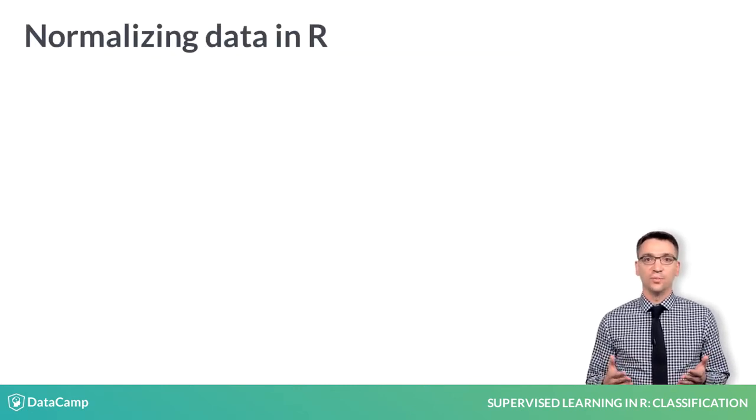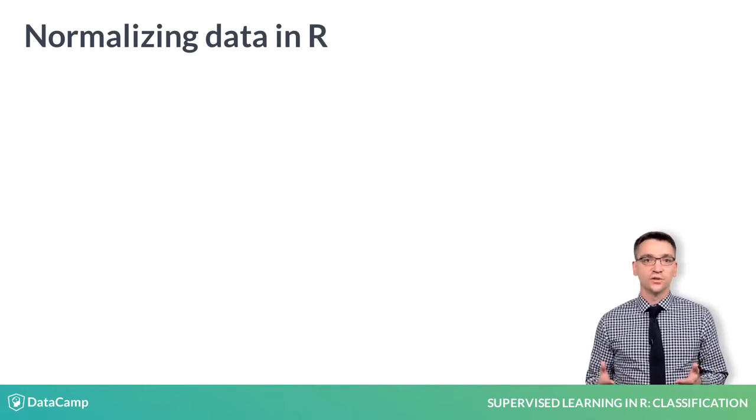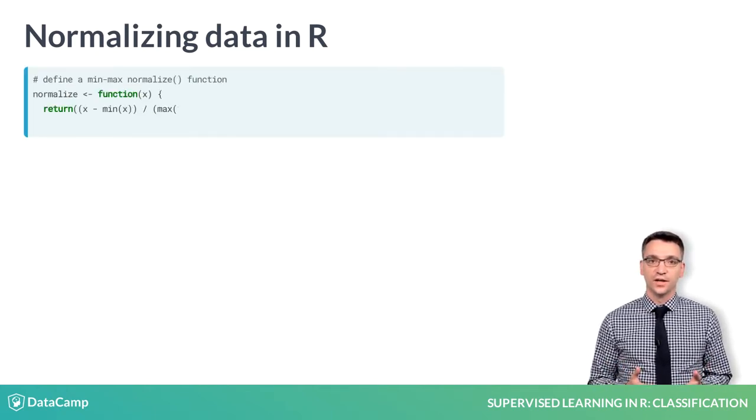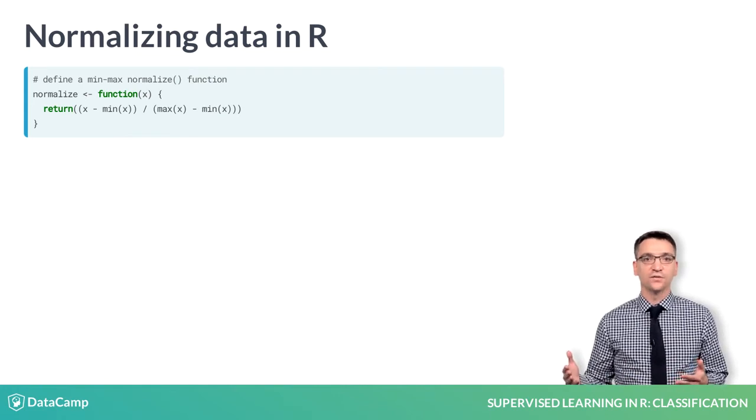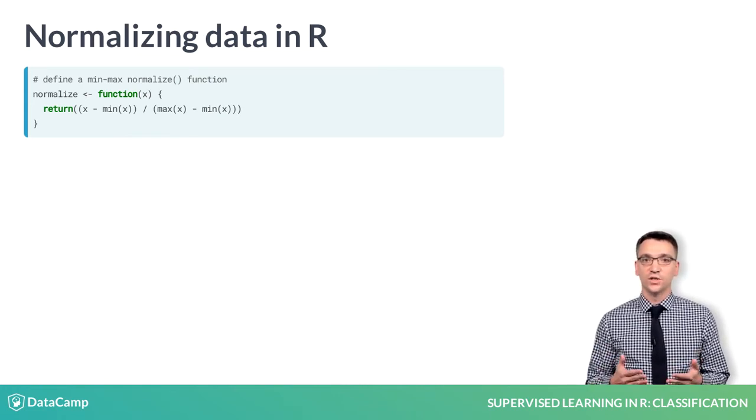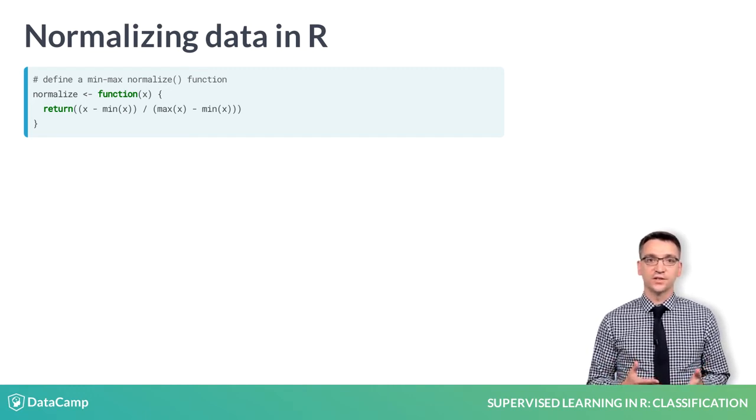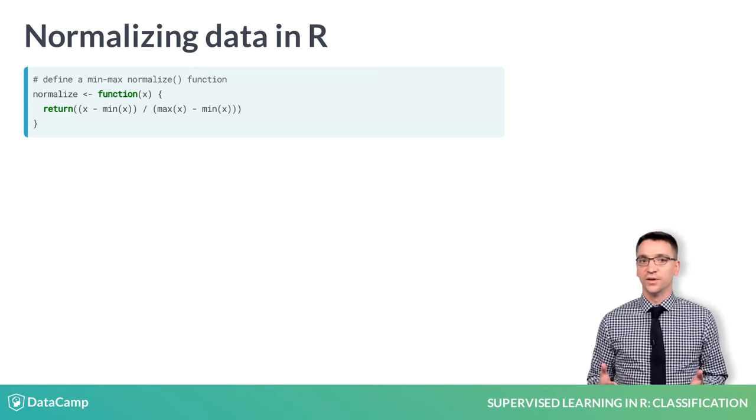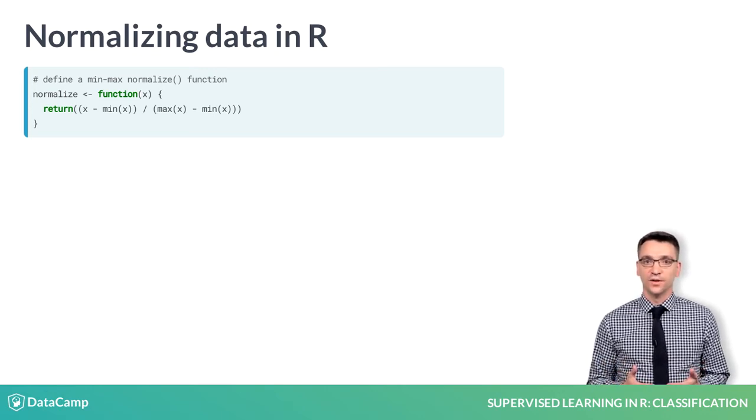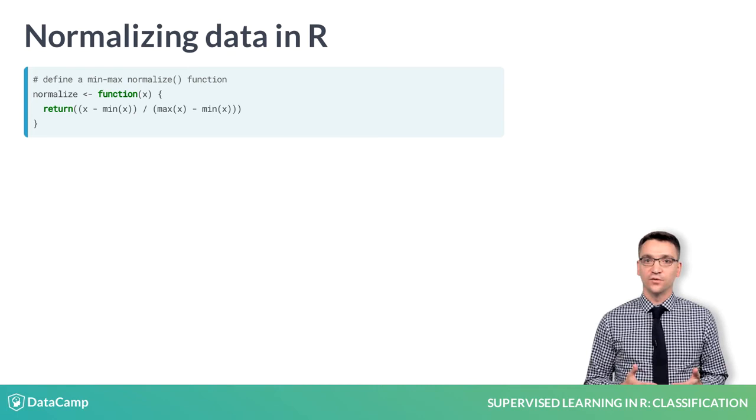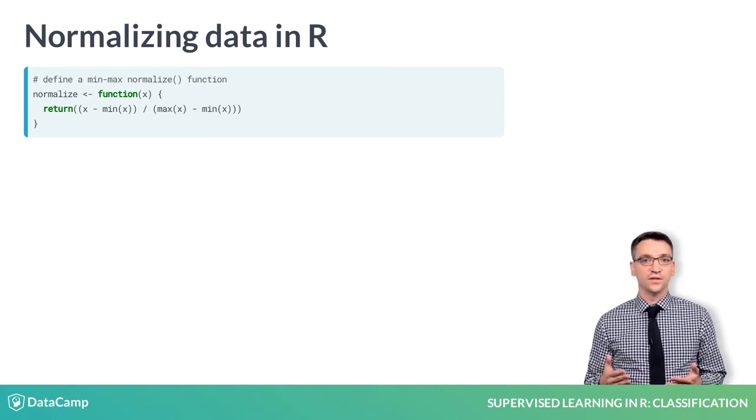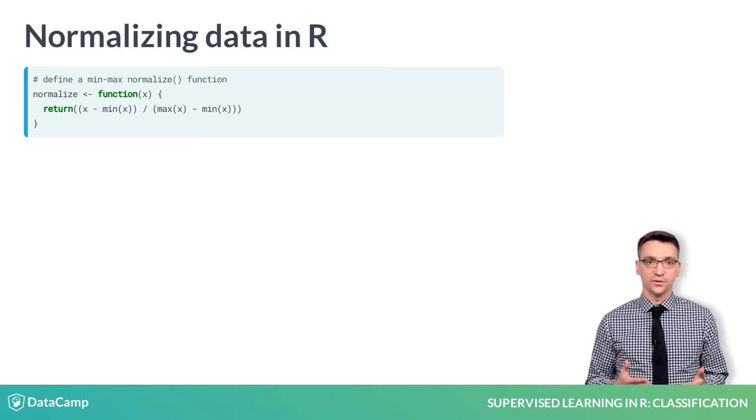R does not have a built-in function to rescale data to a given range, so you'll need to create one yourself. The code here defines a function called normalize, which can be used to perform min-max normalization. This rescales a vector x such that its minimum value is zero and its maximum value is one. It does this by subtracting the minimum value from each value of x and dividing by the range of x values.